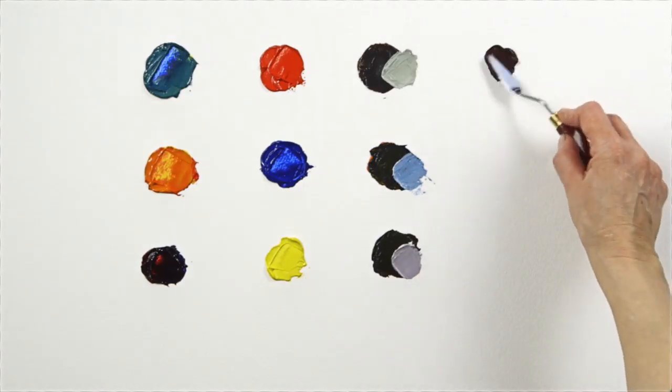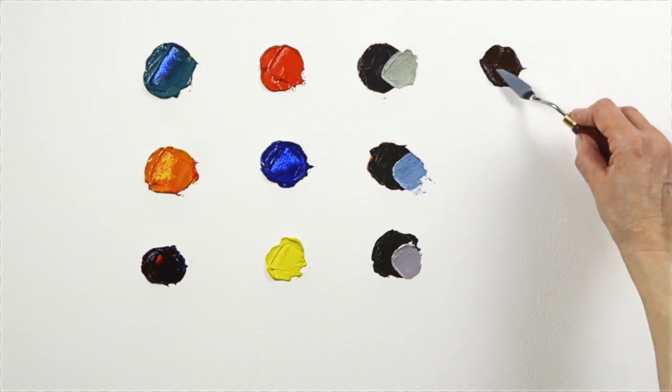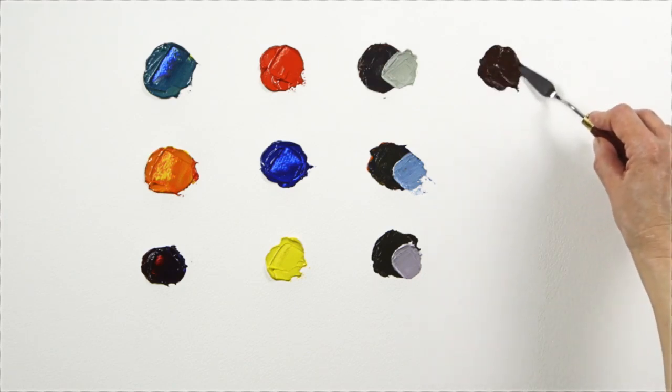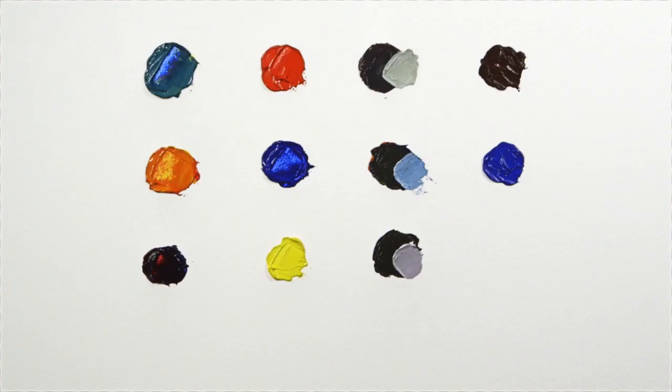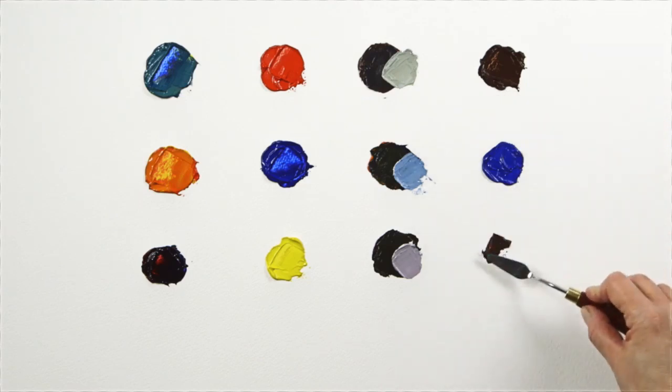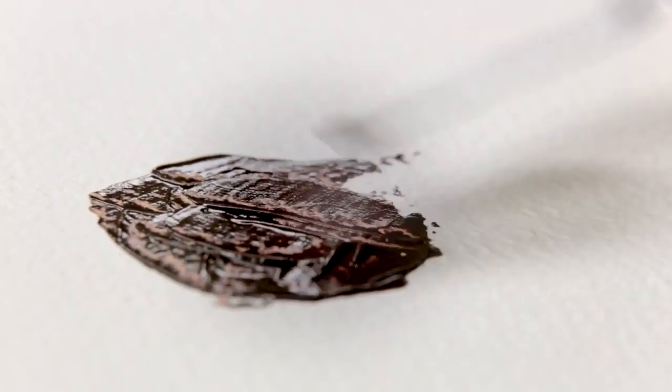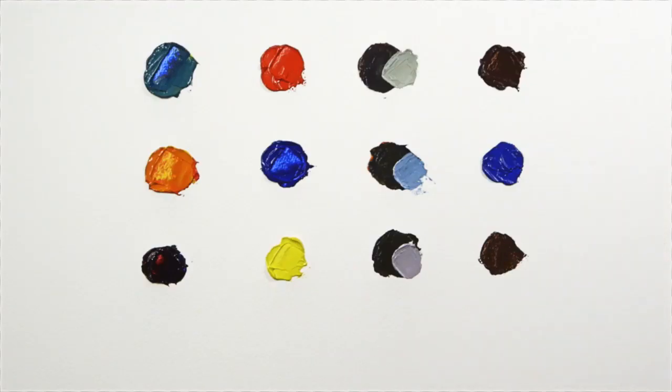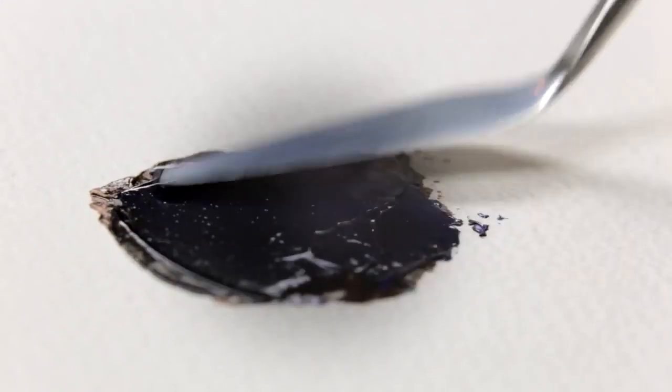You can do the same using browns. For example this burnt umber has a lot of red and yellow warmth. So when mixed with blue makes this beautiful grey.